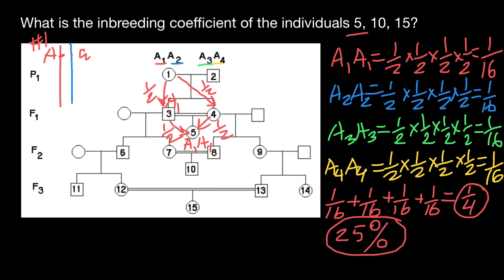That means that 25% of all loci would be identical by descent — for example, two A1 alleles at a particular locus. Since we have roughly 23,000 genes, 25% of those 23,000 genes would be identical by descent, having two alleles inherited from the same ancestor. The inbreeding coefficient for this person is 25%.